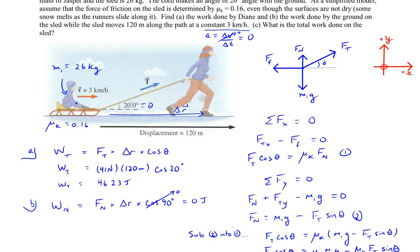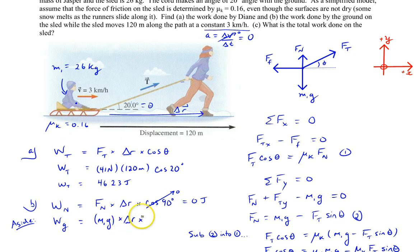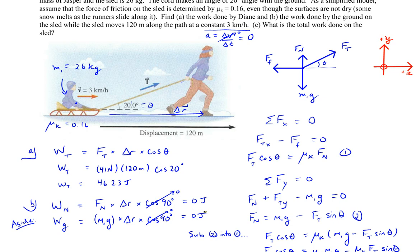Similarly, the work done by gravity: the force of gravity acts straight down, and the displacement is along the x-axis — again 90 degrees between them. Cosine of 90° is zero, so no work is done by gravity either. These two perpendicular forces contribute no work to the system.